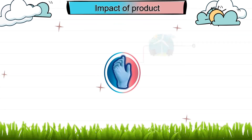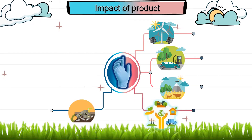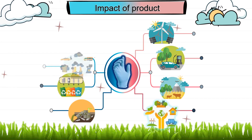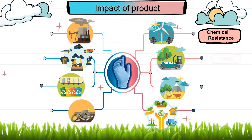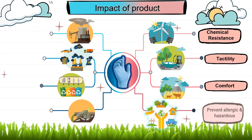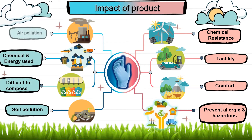Next, we go to the impact. Nitrile gloves have positive and negative impacts. For the positive impact, these gloves are chemical resistant, provide tactility, comfort, and prevent allergic and hazardous reactions. For the negative impact, they affect our environment, such as causing soil pollution, being difficult to decompose, using chemicals and energy, and contributing to air pollution.